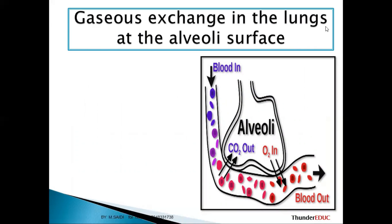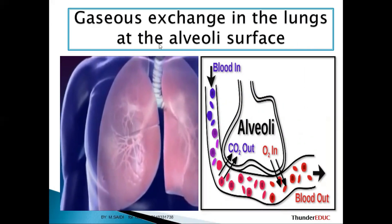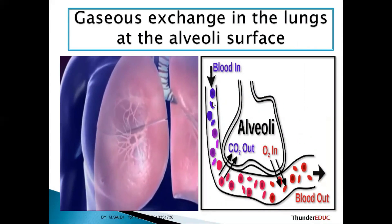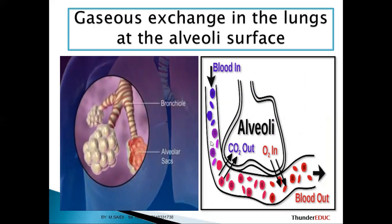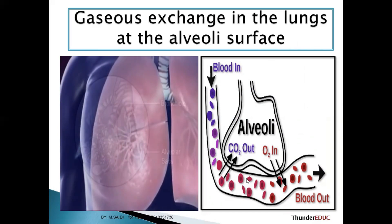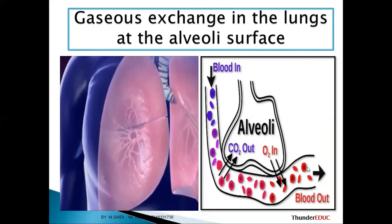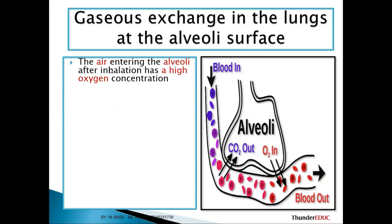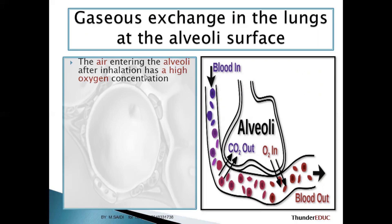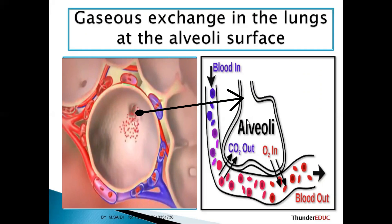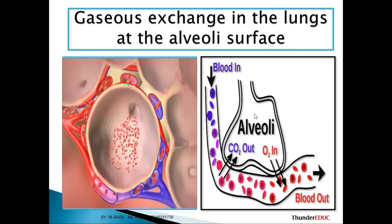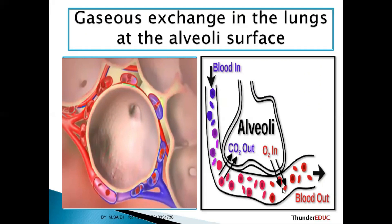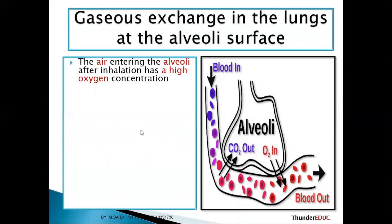Gas exchange takes place in the lungs at the alveoli. Blood comes in with no oxygen and a little carbon dioxide. When it reaches the alveolus, gas exchange takes place and the blood leaves with enough oxygen. Air entering the alveoli after inhalation has a high concentration of oxygen — this is one alveolus, or alveoli if there are many.